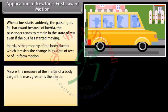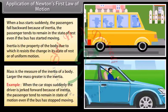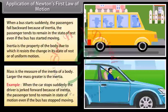Mass is the measure of the inertia of a body. Larger the mass, greater is the inertia. Example: when the car stops suddenly, the driver is jerked forward because of inertia. The passenger tends to remain in state of motion even if the bus has stopped moving.